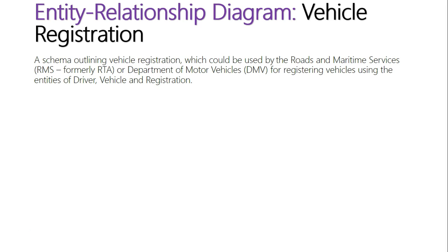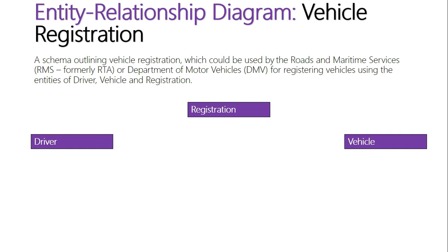Let's first take a look at the entities, which are the different database tables that make up this relational database. Our separate entities would be driver, registration, and vehicle. Think of them as their own different database tables. In a relational database they are called entities.